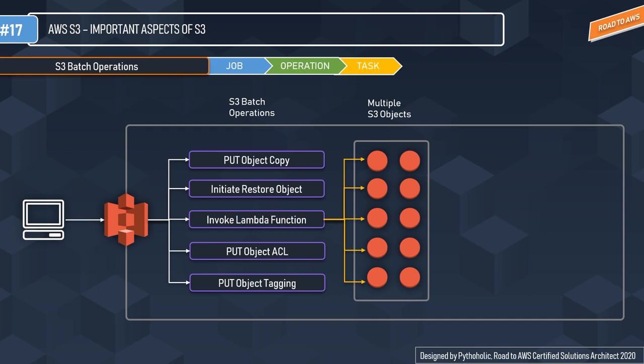ACL is basically a tabular reference to what permissions are attached to a particular object or list of objects, giving you permission levels for each object. The fourth operation is initiate S3 Glacier restore — if you have many objects in Glacier and want them restored back to S3, you can use this operation. It supports two request types: select (to perform a query on an archived object) and restore archive. You must have the S3 RestoreObject permission. The fifth operation is invoke an AWS Lambda function — you can invoke a function synchronously or asynchronously.